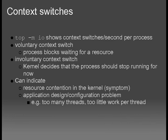Context switches per second, shown in `top -mio`, can be a sign of resource contention in the kernel, or an application design or configuration problem. For example, in Java benchmark workloads I've seen vastly too many context switches — hundreds of thousands per second — spending more time context switching than doing actual work. This can be caused by using too many threads where each thread does too little work, rather than fewer threads doing more work.